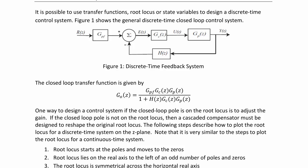The closed loop transfer function is the same as what we had before. It is given by GPF times GC times GP over 1 plus H(Z)·GC(Z)·GP(Z). Remember, GPF is the pre-filter, and we use that in order to adjust for steady state error.